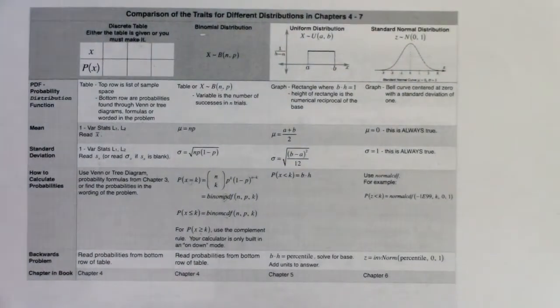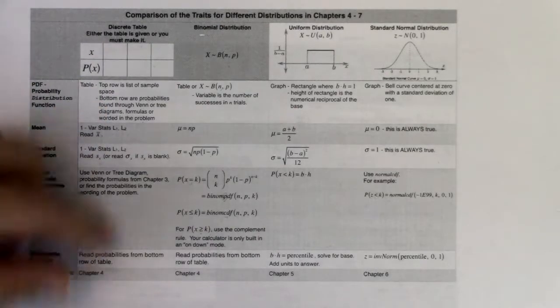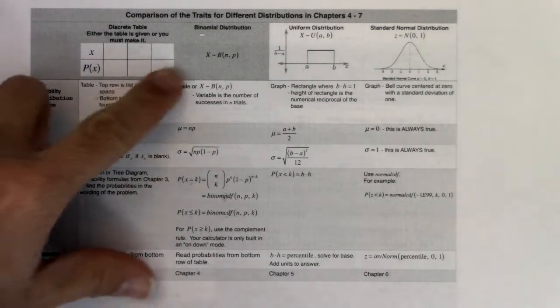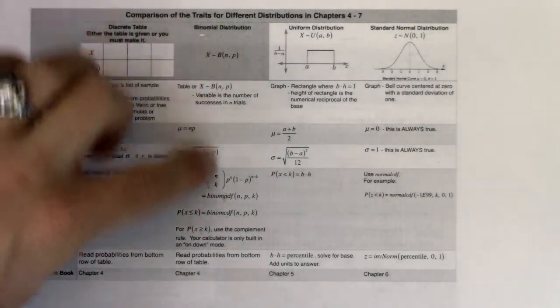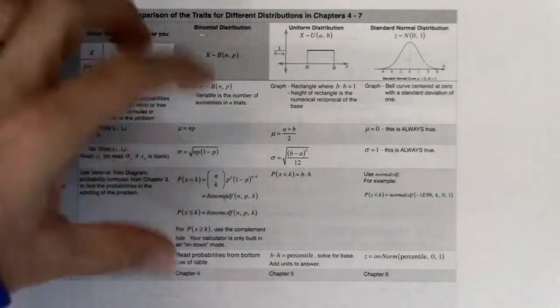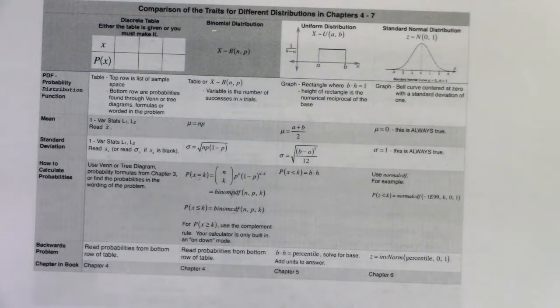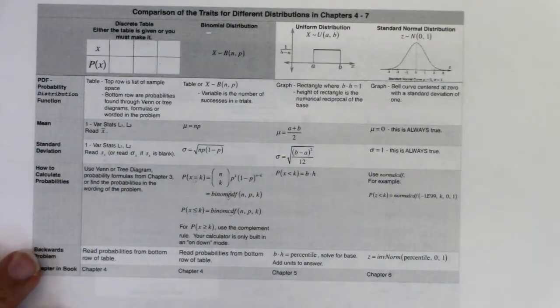We've actually been working with this trait table for a while. Back in chapter 4, we looked at tables where we listed our sample space on the top row for discrete numerical data, with probabilities on the bottom row — all numbers between 0 and 1 that had to add up to 1. Then we looked at the special binomial case, and the binomial distribution will have similar properties to what we're about to see with the sampling distribution for p-prime — they are connected.